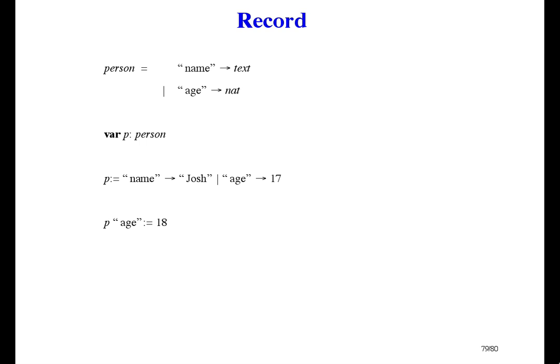The solution to the problem is exactly the same here as it was for arrays. Just change the assignment to this. The new value of p maps age to 18, and all other fields stay as they are.